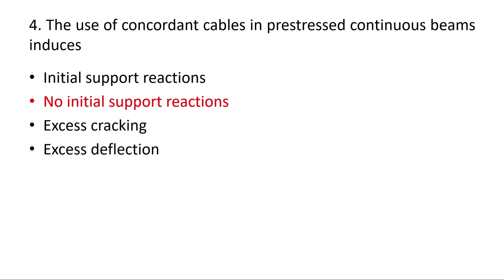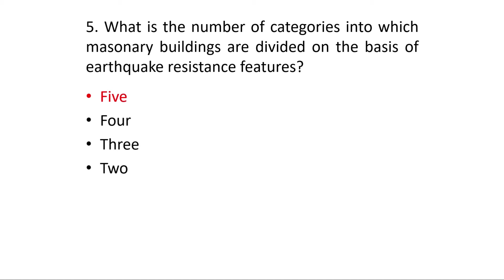Question 5: Masonry buildings are divided into five categories on the basis of earthquake resistance features. These five categories are: reinforced, unreinforced, without infill, with heavy fill, and about construction. So the answer is five.